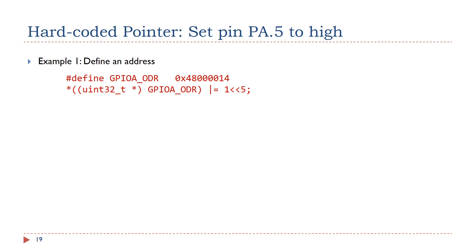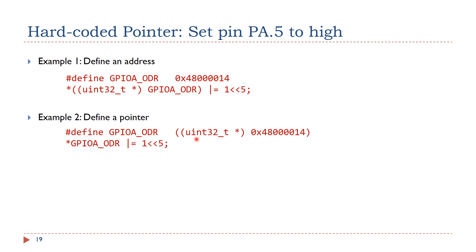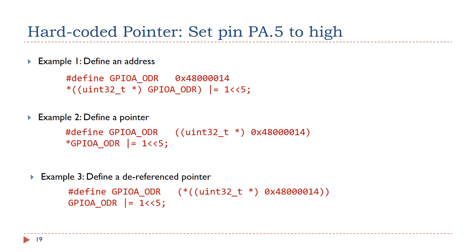Here I give three examples which set GPIO pin PA5 to high. In the first example, we define a macro which is the memory address of the output data register for port A. We cast this constant memory address to a pointer which can point to an unsigned 32-bit integer, then use the dereference operator to access the value pointed. In the second example, we define a pointer using this macro, which casts the memory address to a pointer, so in the code we can directly use the dereference operator. In the third example, we incorporate the dereference operator into the macro, so software can directly use the dereferenced pointer to access the memory. The last approach has been used widely.